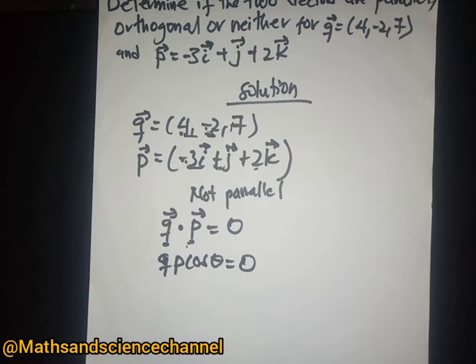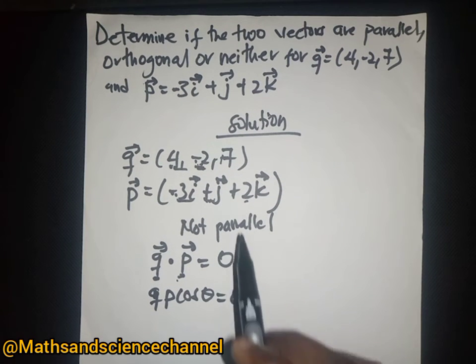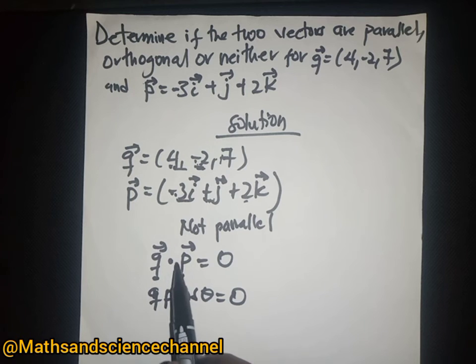This means that the two vectors must be orthogonal. Since it is equal to zero, these two vectors are orthogonal but not parallel.